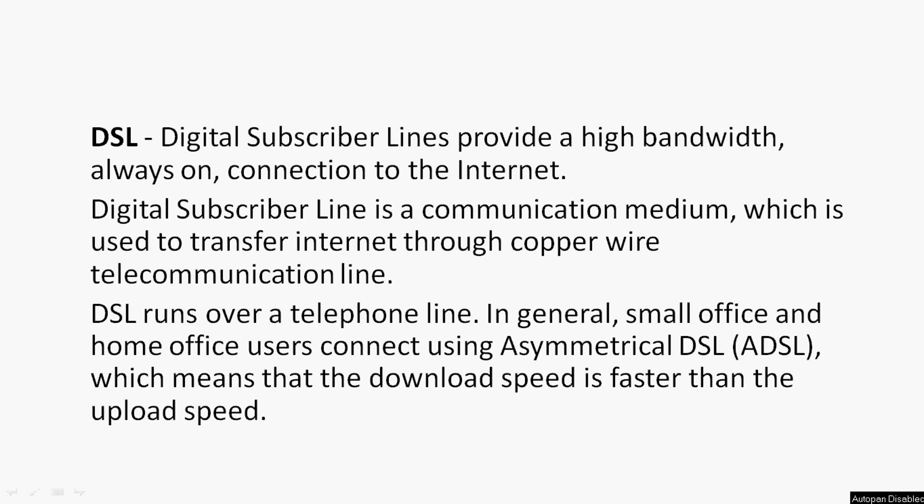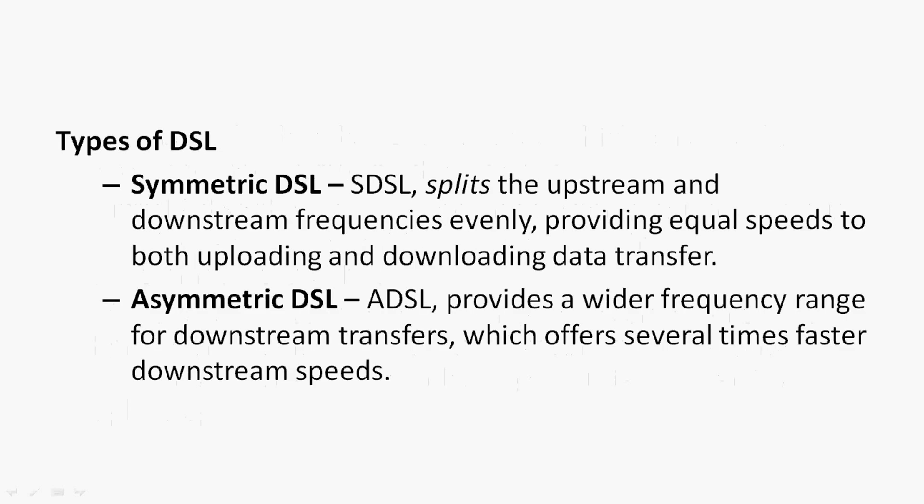Here we can see types of DSL: Symmetric DSL and Asymmetric DSL. Symmetric DSL, that is SDSL, splits the upstream and downstream frequencies evenly, providing equal speeds to both uploading and downloading data transfer. Asymmetric DSL, that is ADSL, provides a wider frequency range for downstream transfers, which offers several times faster downstream speeds.